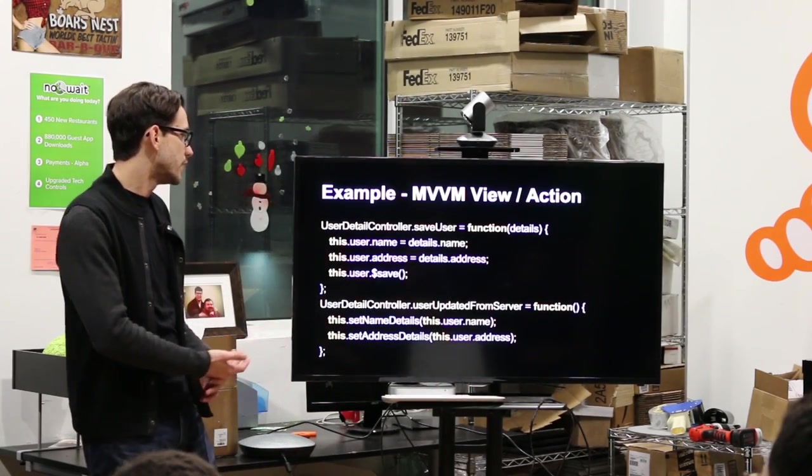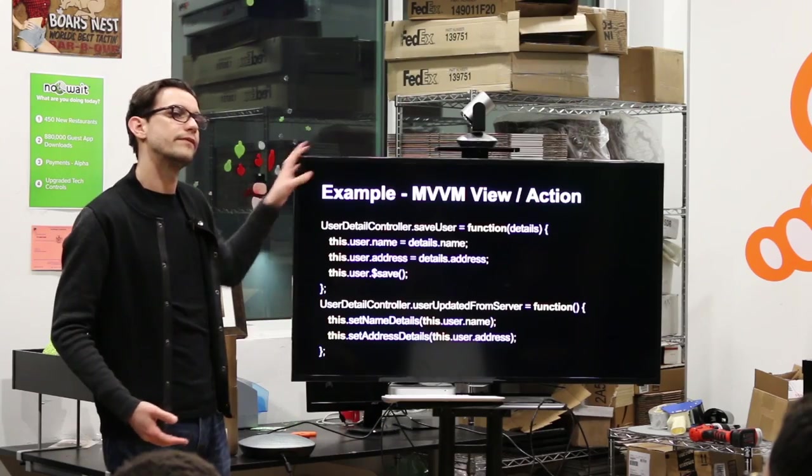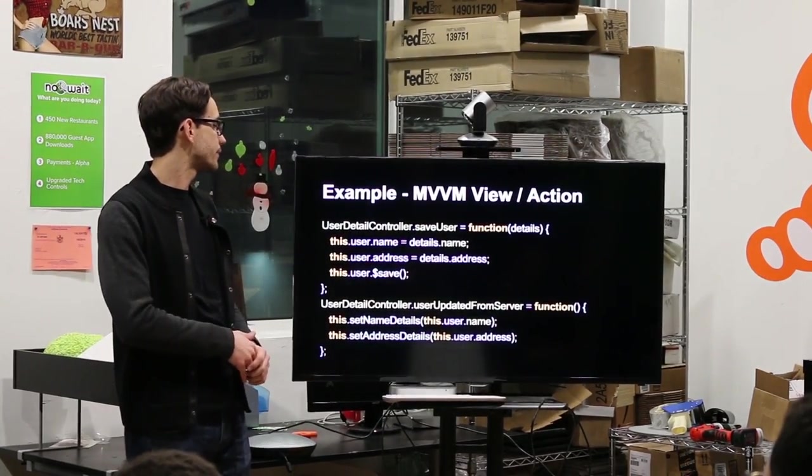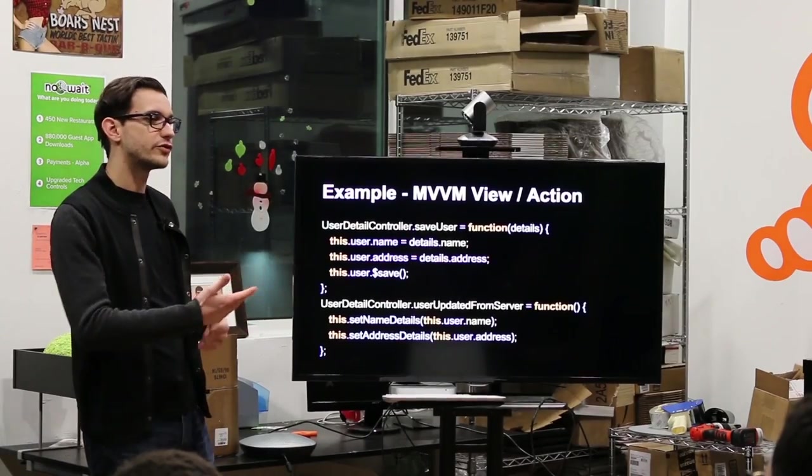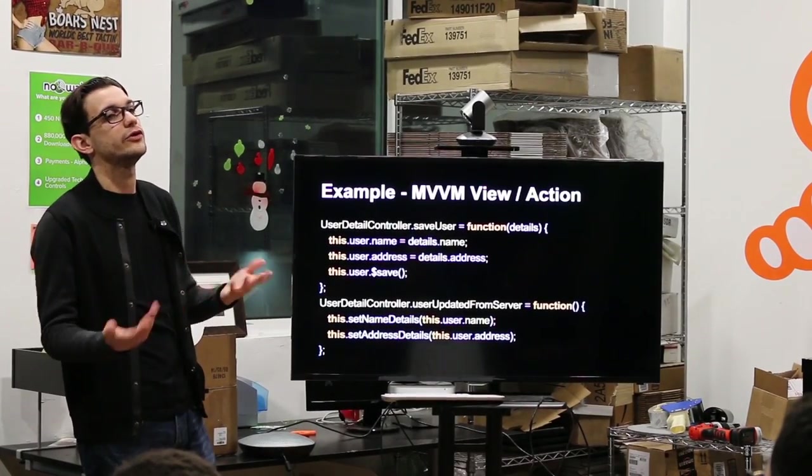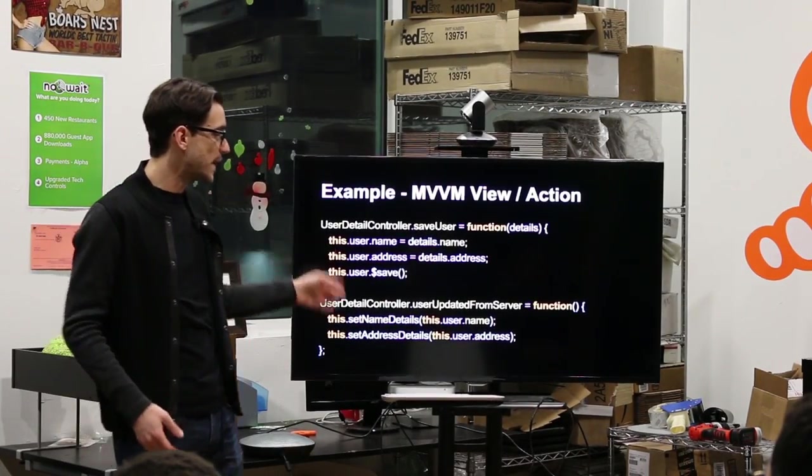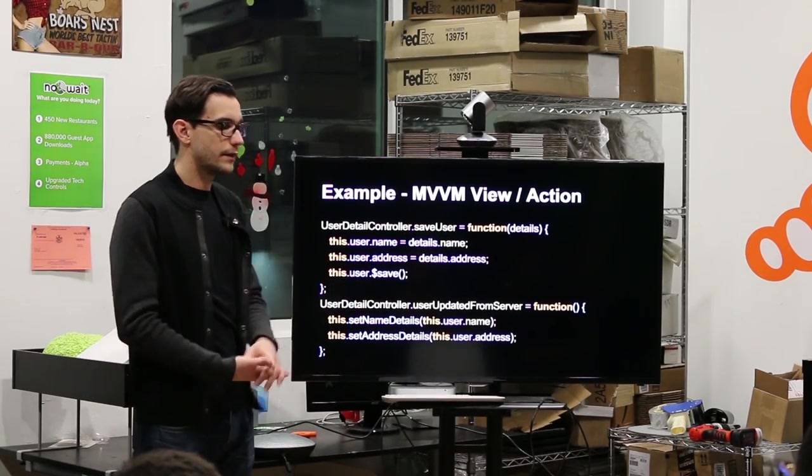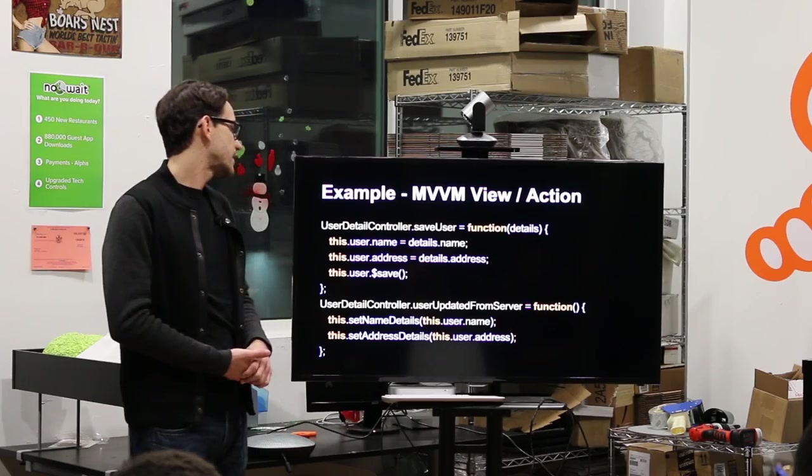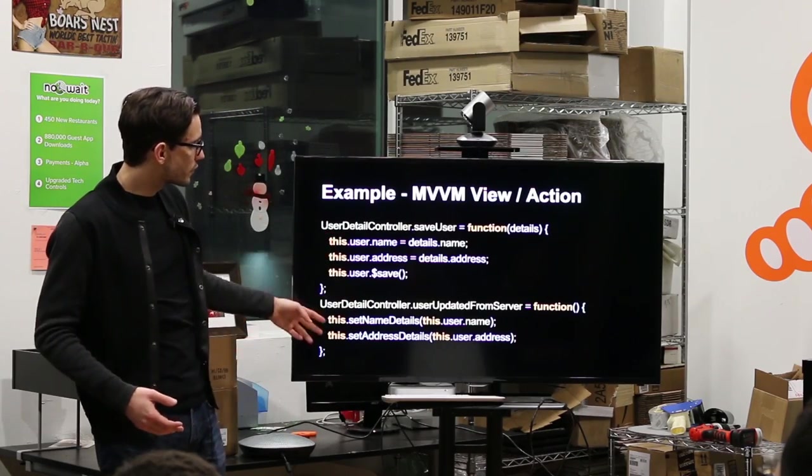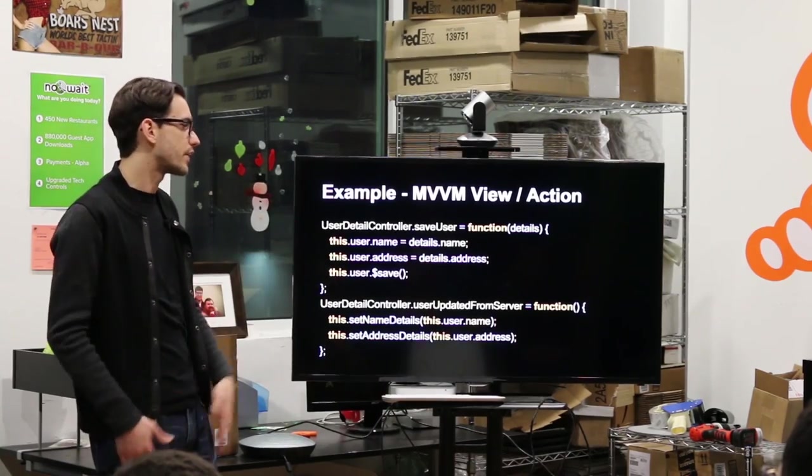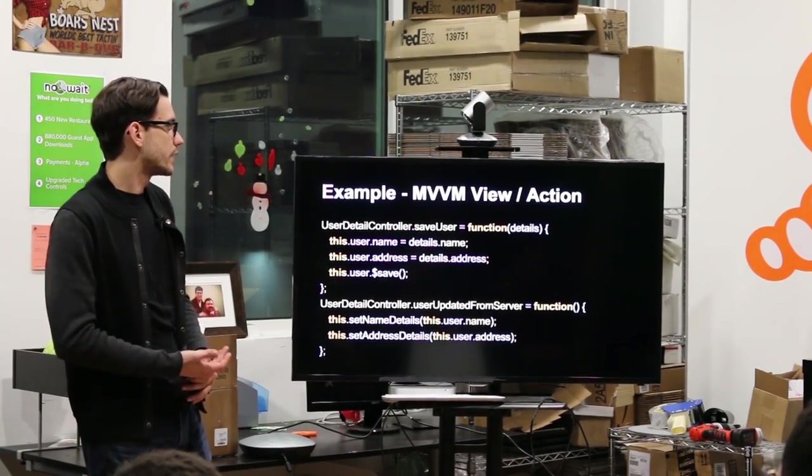So the difference is if I start adding, if we start adding complexity. So let's say the user got updated from the server, not on your, not by user interaction, how do you then, what do you do then? So now you have to map your, the details that you got into the into the model. And now you have like, you can see there's some sort of like code repetition to a certain degree. Like you have to map things back and forth and it's a lot more work.